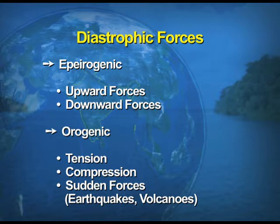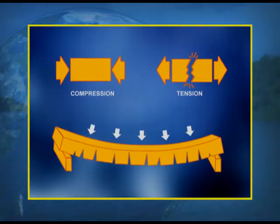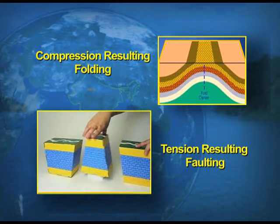As shown in the diagram, compression involves forces working from opposite directions. Tension is basically a vertical movement that divides rocks into different parts. Compression and tension further result in two different outcomes.